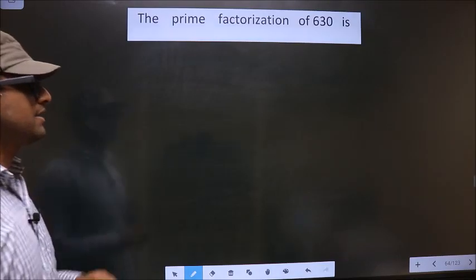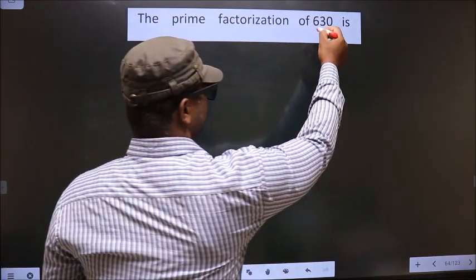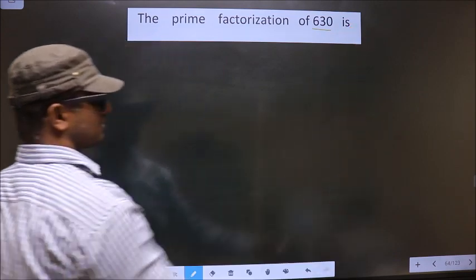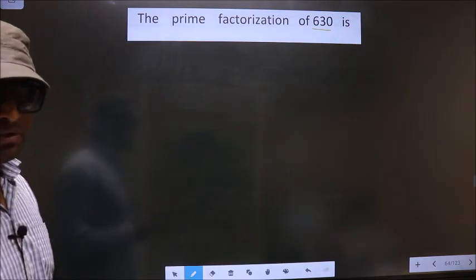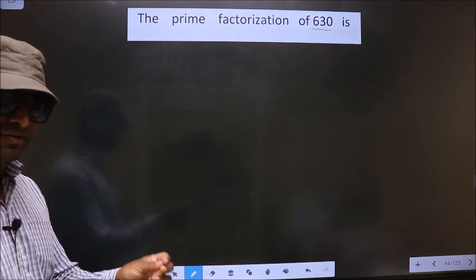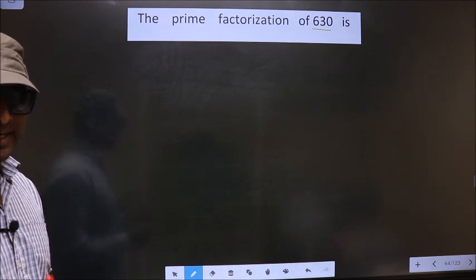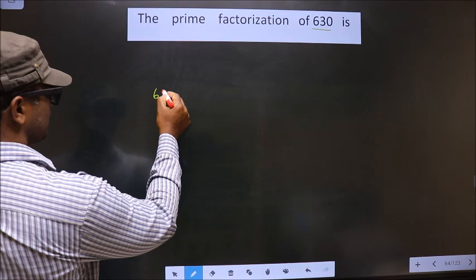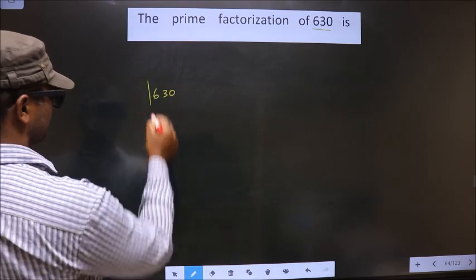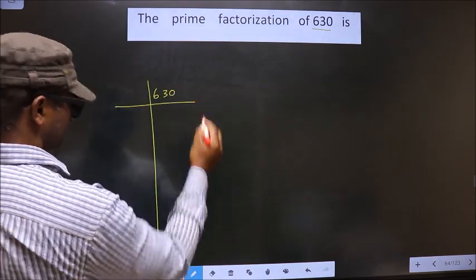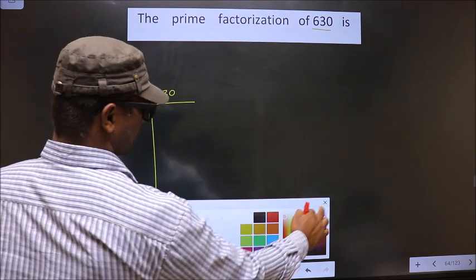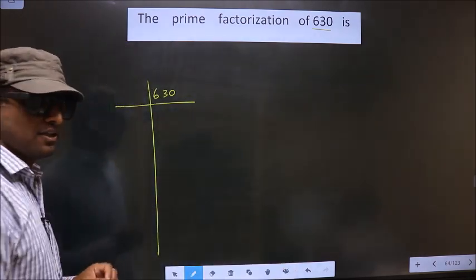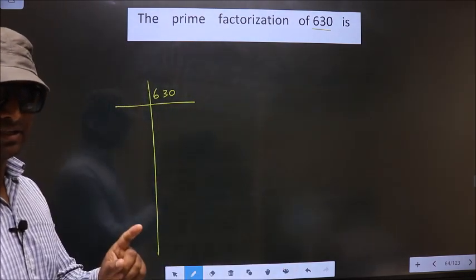The prime factorization of 630 is... to do prime factorization, first we should frame it in this way. See, 630. This is your step 1. Next.